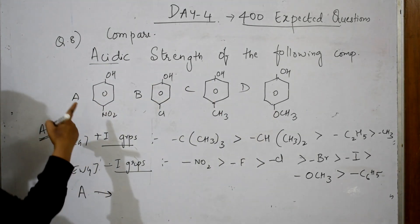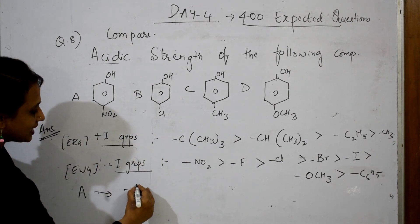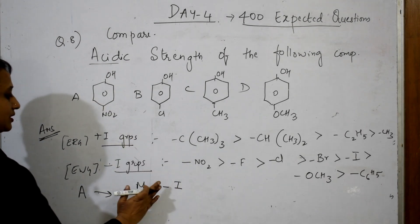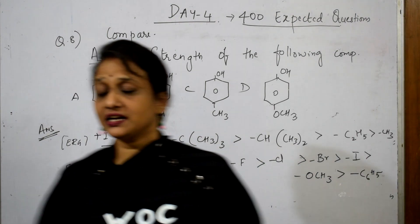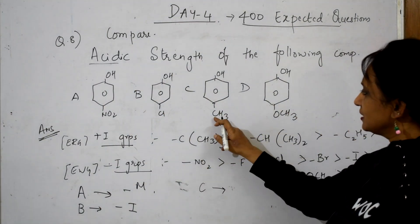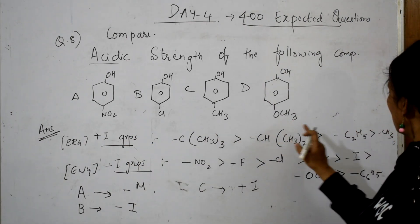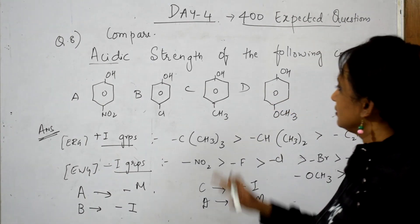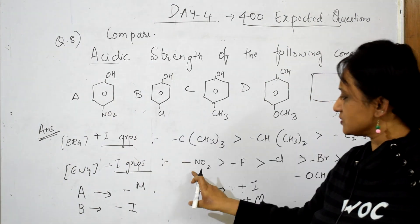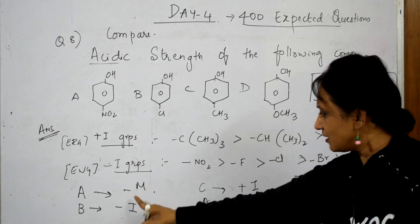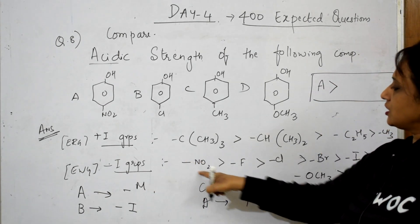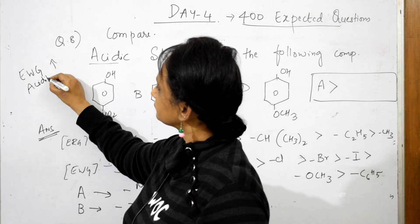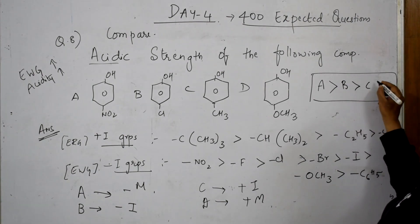In option A, you are seeing nitro — that is a −I or −M effect. In option B, chloro — same thing, that is minus I effect. Option B has minus I effect. Option C has methyl — that is plus I effect. Option D has OCH₃ — that is plus M effect. Now write down the order. Always nitro is the strongest, so A is the most acidic. After A comes B with minus I effect. Electron withdrawing groups mean more acidity. Next comes C, then D. The order is A > B > C > D.